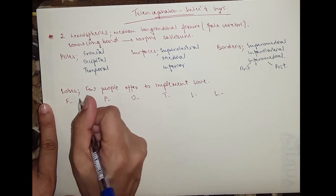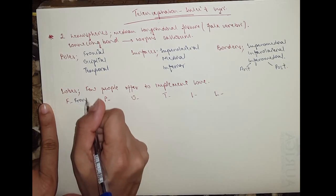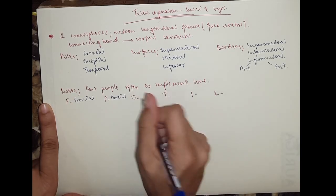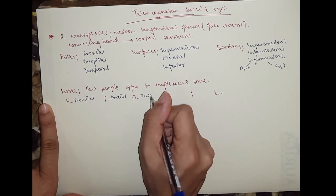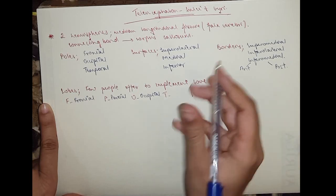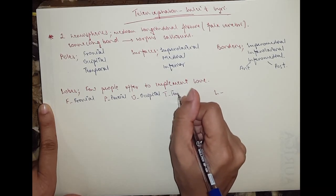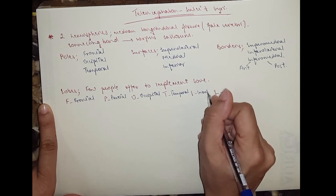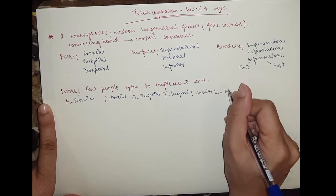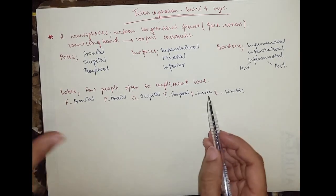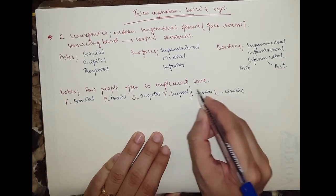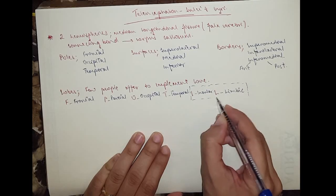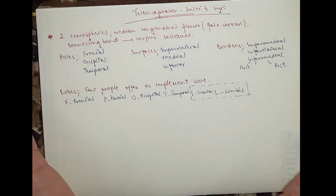F would be the frontal lobe, P the parietal lobe, O the occipital lobe, T the temporal lobe, I the insular, and L the limbic lobe. The insular and the limbic lobe you cannot visualise when you look at the surface of the brain, because they are a deep part of the cerebrum.